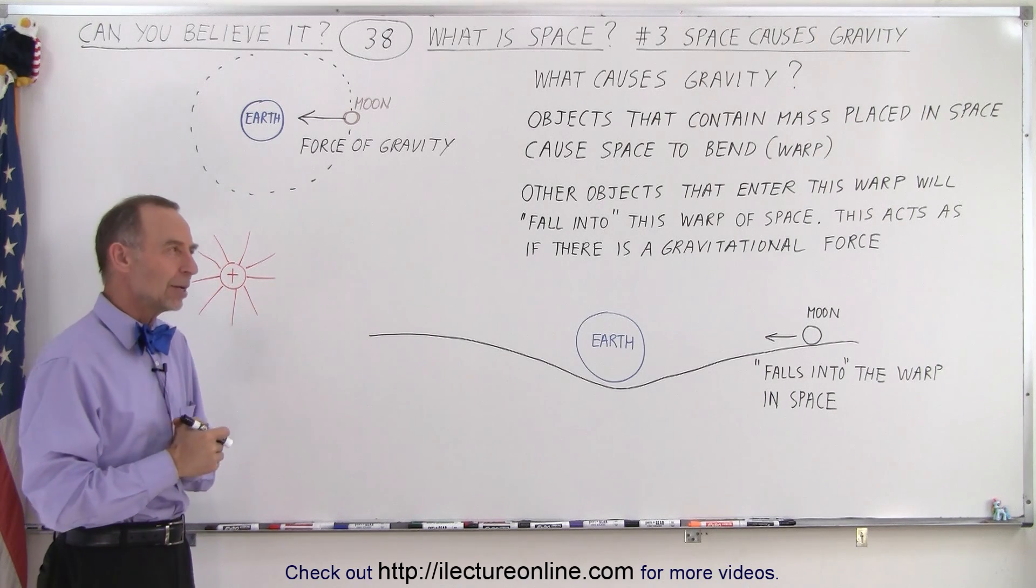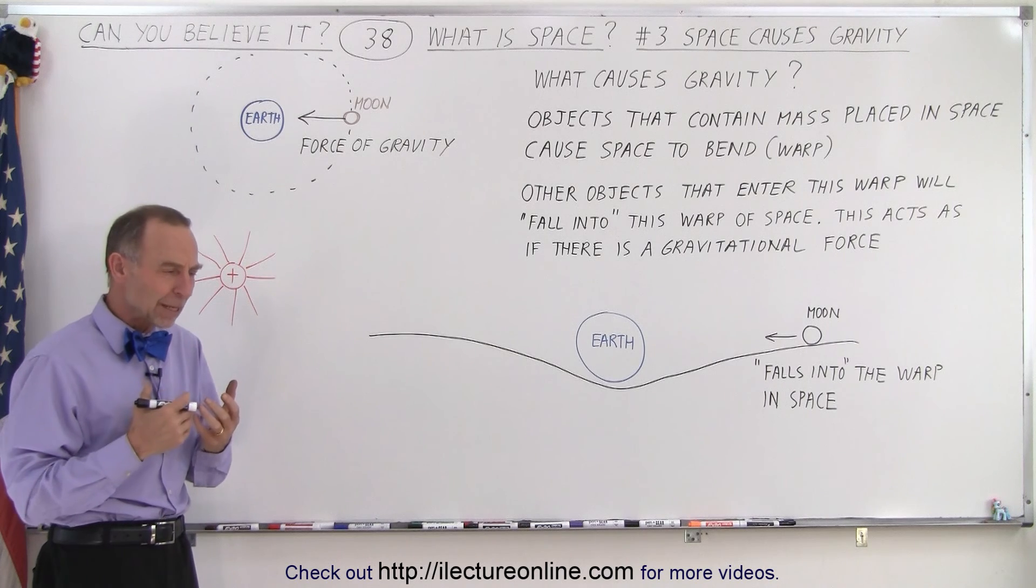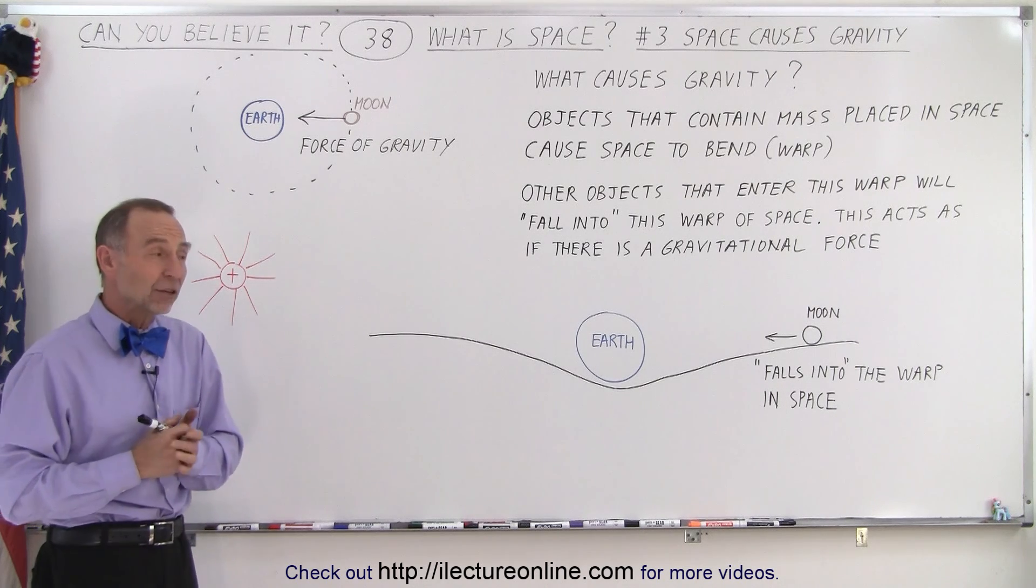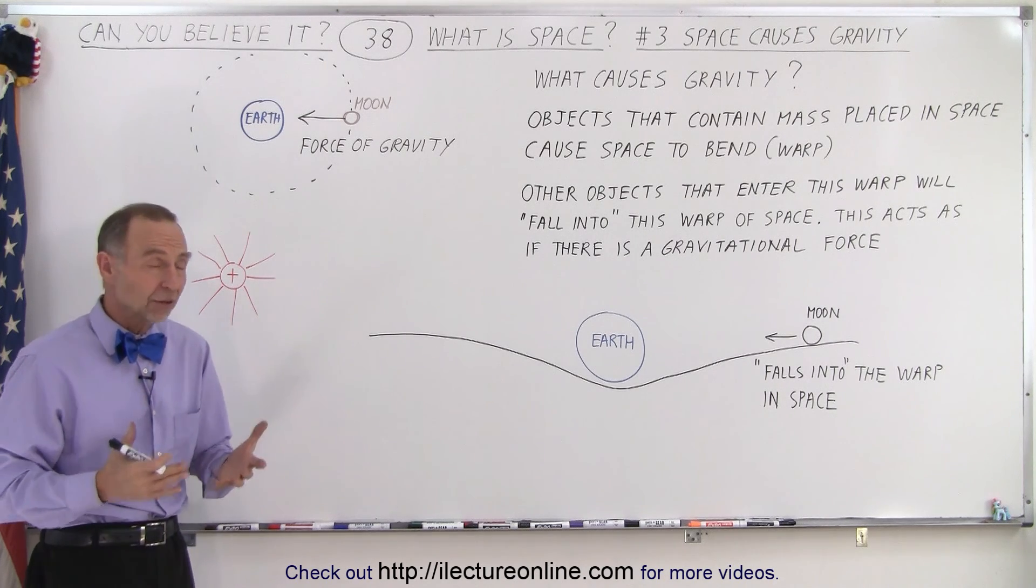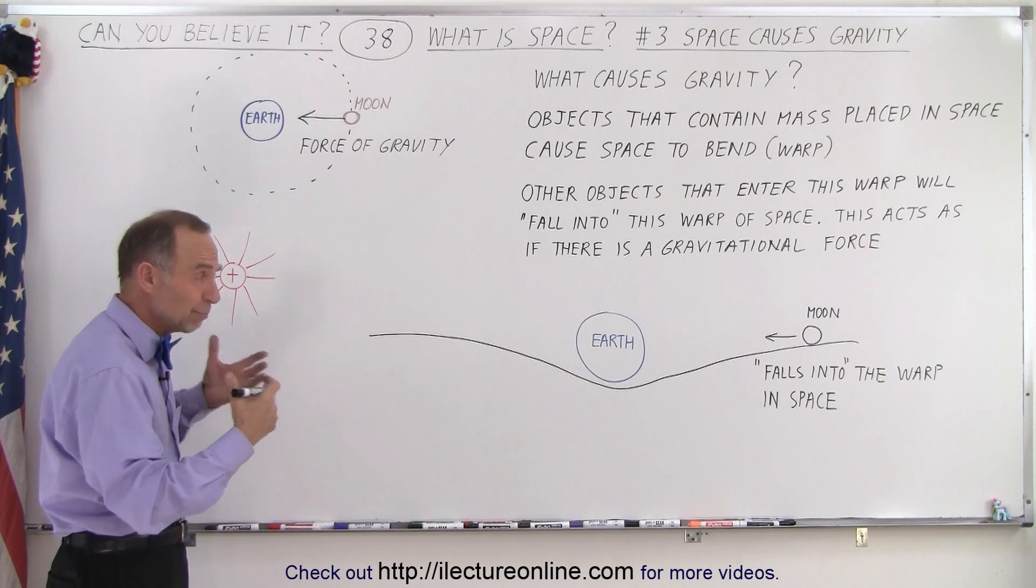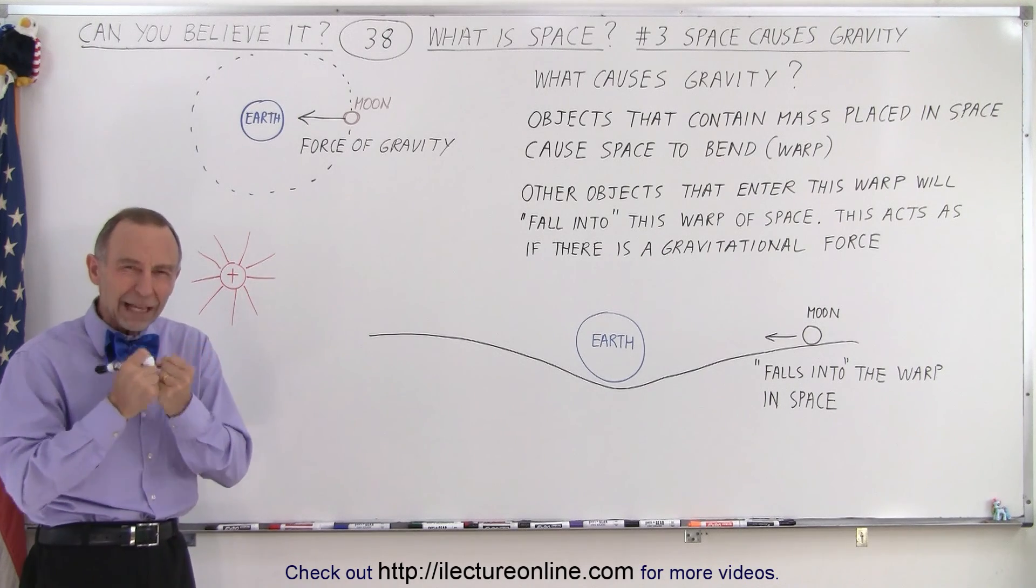But later on, when Einstein came along, he thought that light is affected by gravity as well, and it doesn't have any mass, so therefore it must not be a force. There must be something else going on.